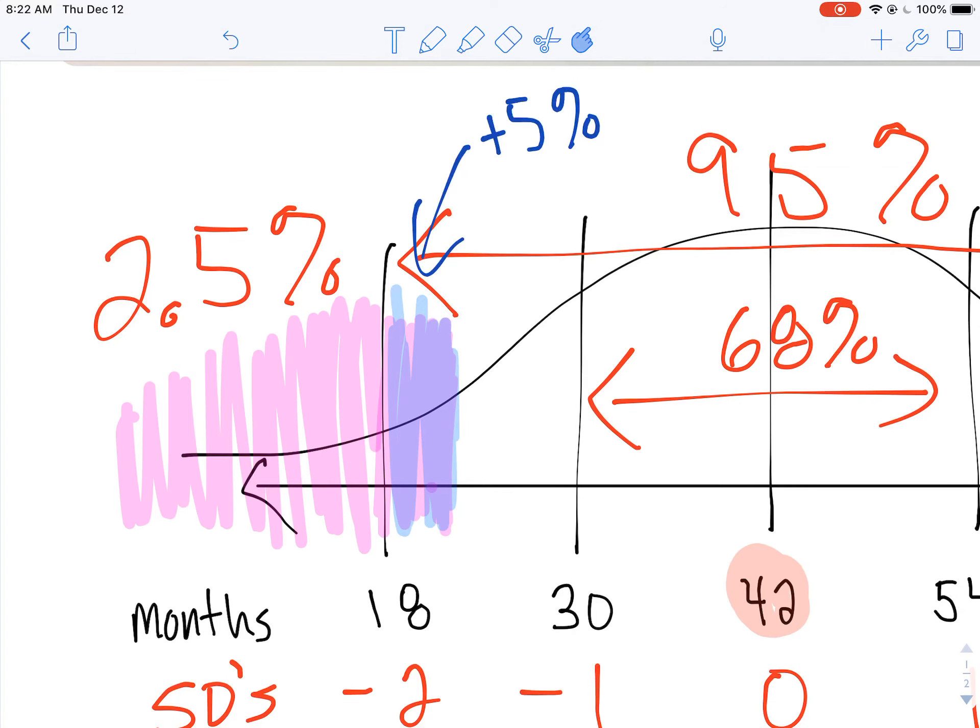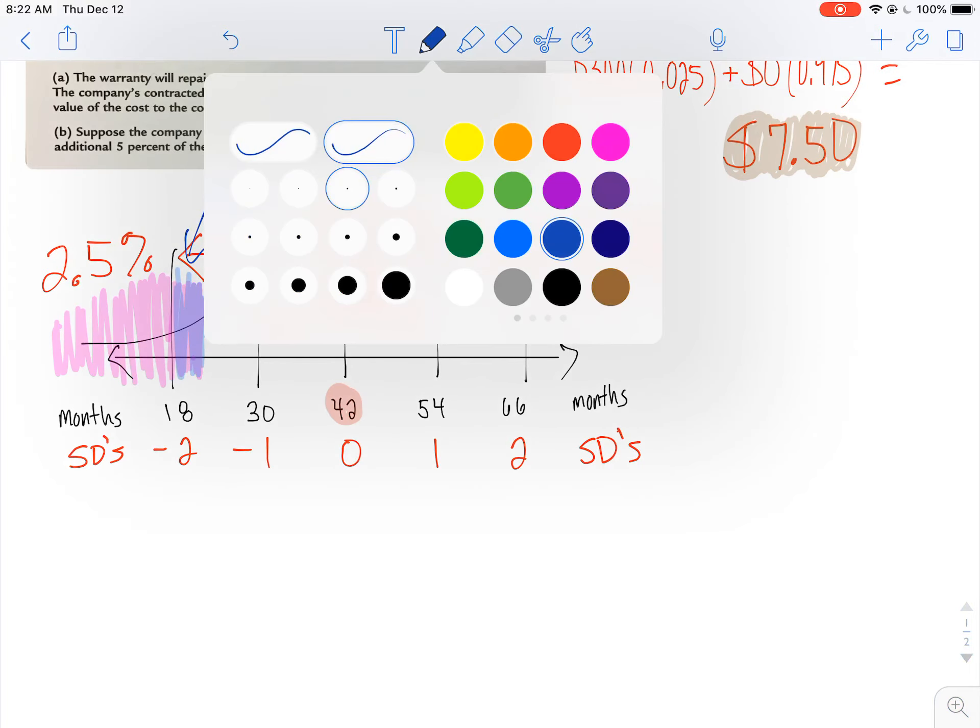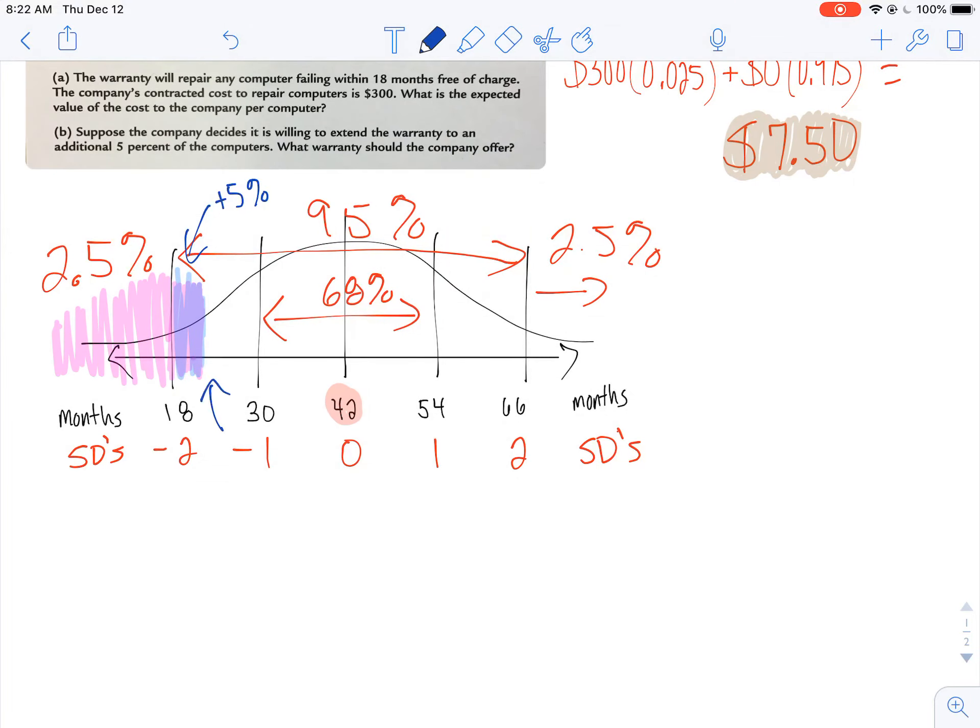So that means they're going to be taking care of 7.5% of their computers. So I want to figure out what value it's going to be right here. So what value will 7.5% of my data be less than?